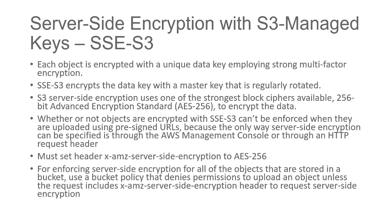Server-side encryption can only be specified through the AWS Management Console or through HTTP requests. You must set the header x-amz-server-side-encryption to the value AES256 to enforce server-side encryption. To enforce server-side encryption for all objects stored in a bucket, use a bucket policy that denies permissions to upload the object unless the x-amz-server-side-encryption header is present on the request. I have a hands-on demo video for this — I'll paste the link in the comment section.